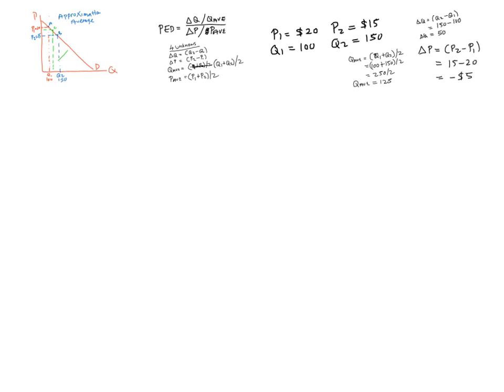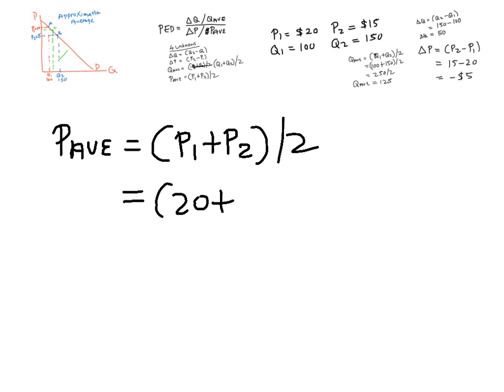And now we find the last unknown, average price. P1 plus P2 divided by 2. 20 plus 15 divided by 2. 35 divided by 2. 17.5.